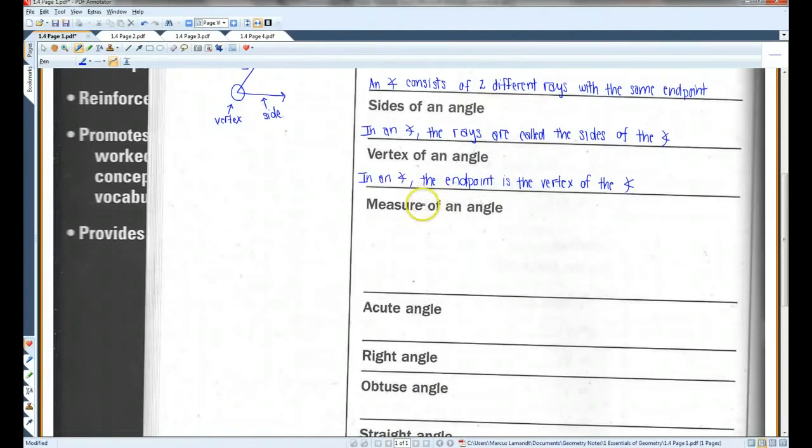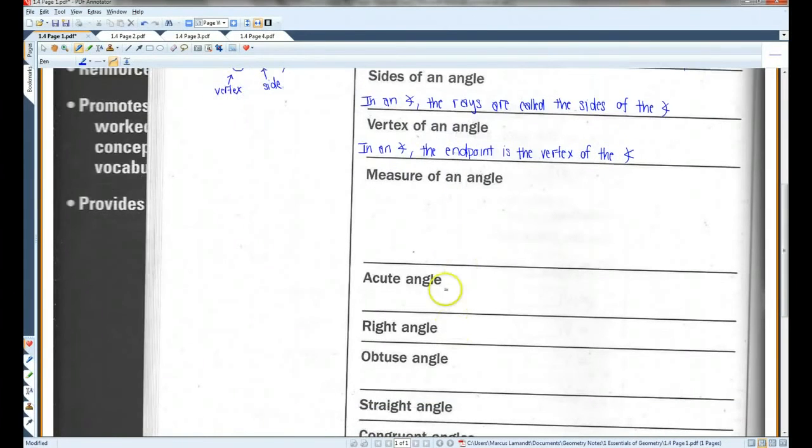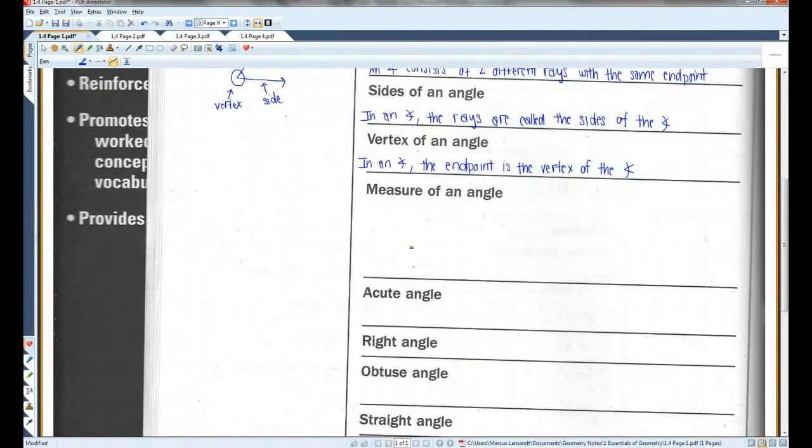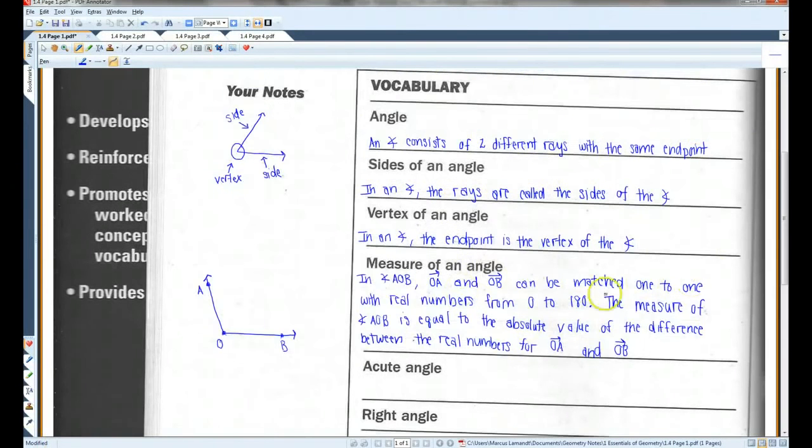The measure of an angle. At some point this unit, we're going to be doing a protractor activity in which I'll have you guys measure different kinds of angles. For now, just write down this definition and the different kinds of angles. I'll draw you guys some pictures, but we will be going more in-depth in how to measure angles later this unit. This definition is kind of long, so feel free to pause the video here if you need to.